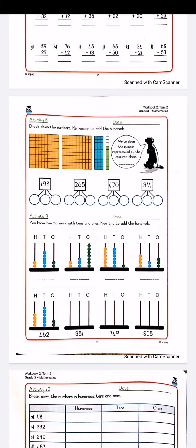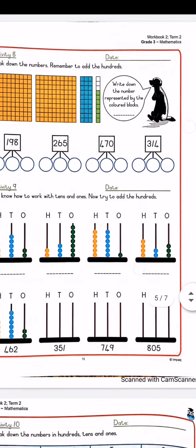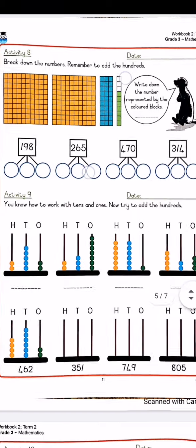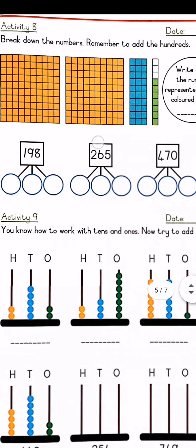So for Activity 8 for today, I want you to break down the numbers. Remember to add the hundreds. The skunk in the speech bubble says, write down the number represented by the colored blocks. Remember we said a long row is 10, but now this entire square, if they show you a big square like this, like the orange square, it is a 100.